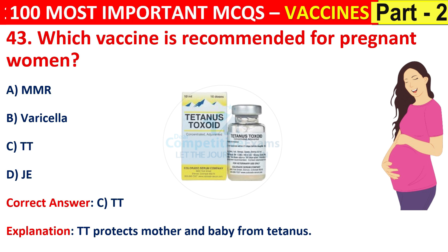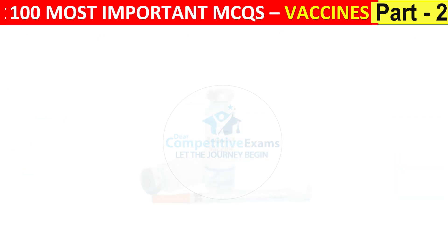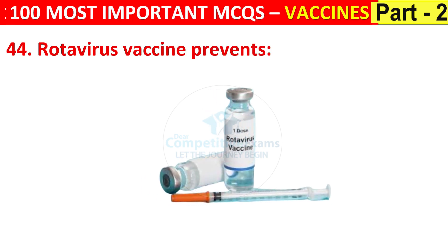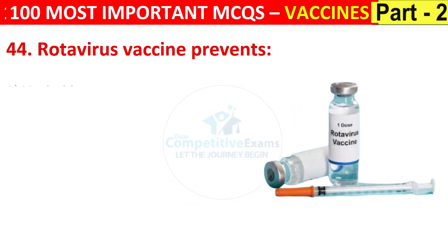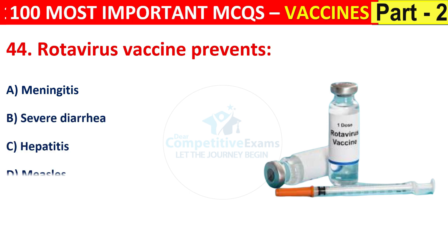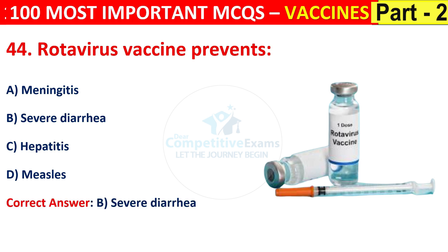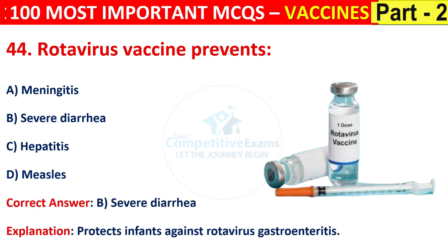Question number 44. Rotavirus vaccine prevents meningitis, severe diarrhea, hepatitis, or measles. The right answer is B, that is severe diarrhea. It protects infants against rotavirus gastroenteritis.